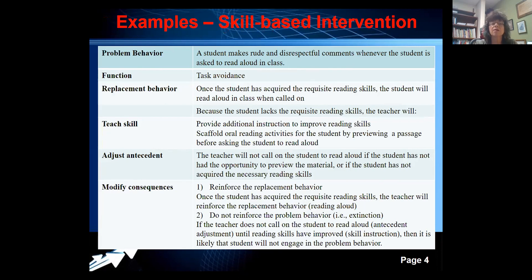We're going to adjust the antecedents: the teacher will not call on the student to read aloud if the student has not had the opportunity to preview the material, or if the student has not yet acquired the necessary reading skills. We're also going to modify consequences. First, we're going to reinforce the replacement behavior — once the student has acquired the requisite reading skills, the teacher will reinforce reading aloud with a reinforcer the student wants. Second, we're going to use extinction for the target problem behavior.